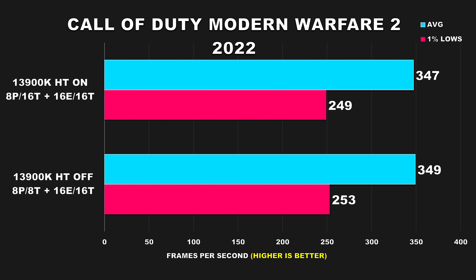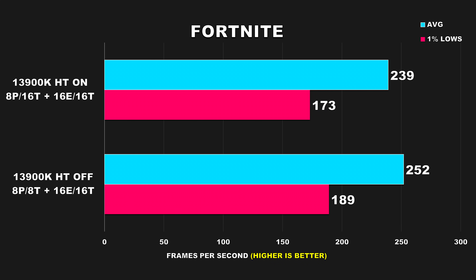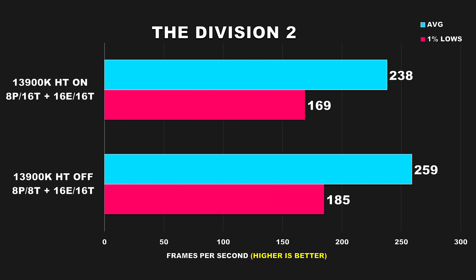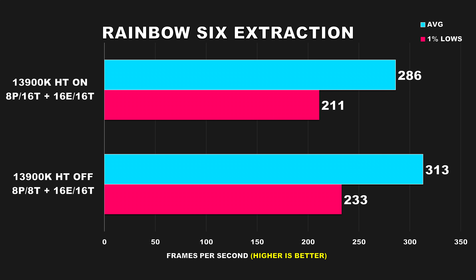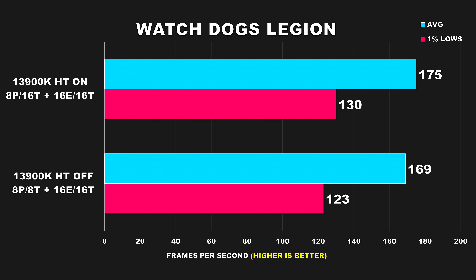Call of Duty: Modern Warfare 2 (2022) shows nothing interesting — either configuration is relatively the same. Fortnite, on the other hand, does seem to benefit from having hyper-threading disabled: average FPS increases by around 5% and 1% lows see an even larger improvement at 8%. The Division 2 shows an 8% increase for average FPS and 9% for 1% lows when disabling hyper-threading. Rainbow Six Extraction behaves very similarly, with about a 9% increase to both average FPS and 1% lows. Finally, Watch Dogs Legion goes in the opposite direction — enabling hyper-threading gives a 4% increase for average FPS and 6% for 1% minimums.